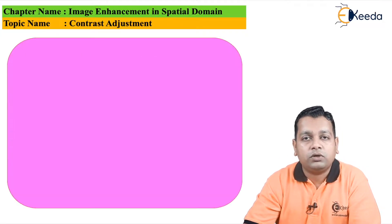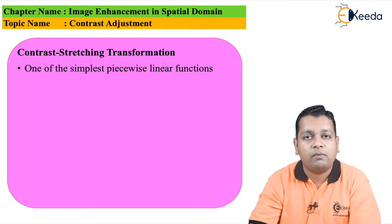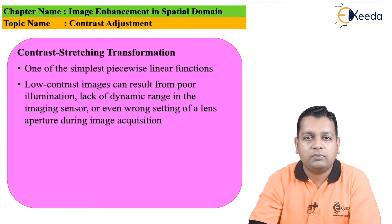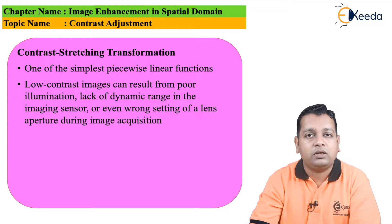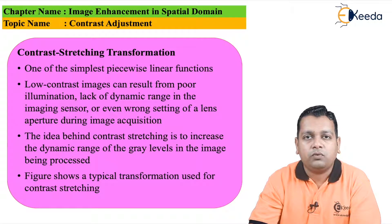The next term related to this topic is contrast stretching, which is one type of transformation. It is introduced as one of the very simplest piecewise linear functions. Low contrast images may result from poor illumination, lack of dynamic range in the imaging sensor, or even wrong setting of the lens aperture during image acquisition. Because of these causes, we require contrast stretching. The idea is to increase the dynamic range of the gray levels. The next figure shows a typical transformation used for contrast stretching.